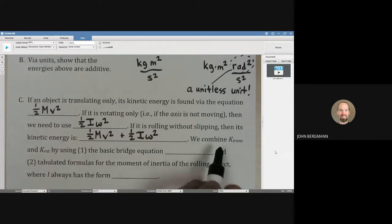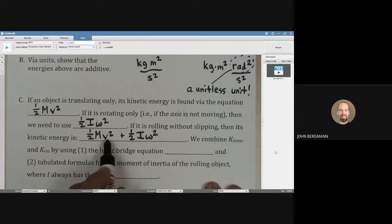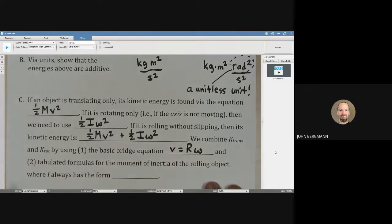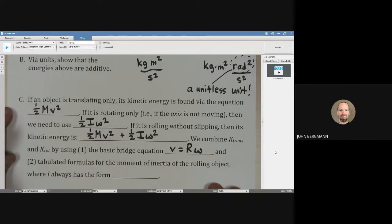We combine those two parts by using the bridge equation between the velocities, which is v equals r omega. That's how we can effectively make these two quantities talk to each other for a given problem.